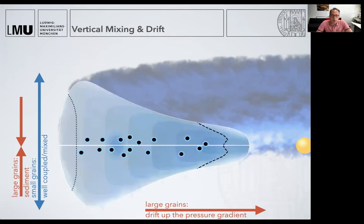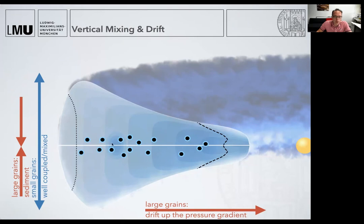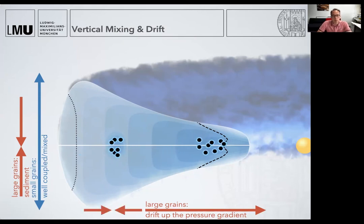In a normal disk without substructure, large particles drift inward, and larger particles drift faster. But if we have some perturbation in the pressure structure that causes a local maximum in the pressure, you can guess what's happening. Particles drifting up the pressure gradient will accumulate at the highest pressure point. So a pressure maximum is what we would call a dust trap, because it can locally trap the dust particles and stop them from drifting inward. That's a summary for the dynamics of the dust.